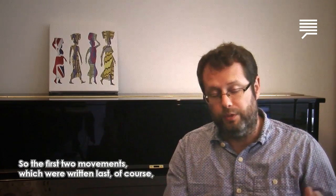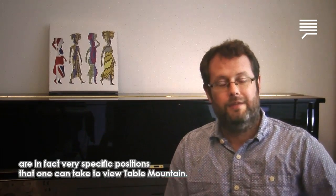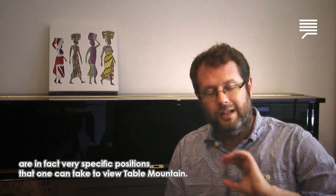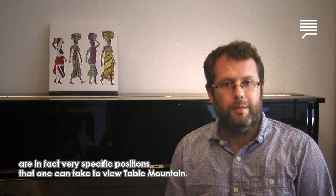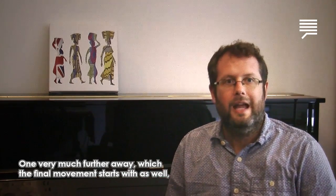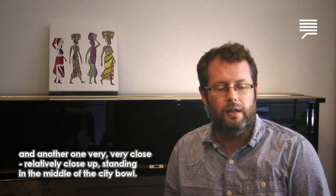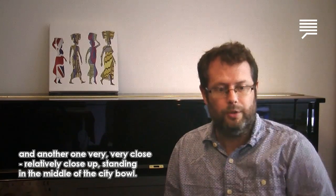The first two movements, which were written last, are in fact very specific positions that one can take to view Table Mountain. One very much further away, which the final movement starts with as well, and another one very very close, a relatively close up standing in the middle of the city bowl.